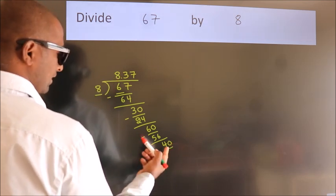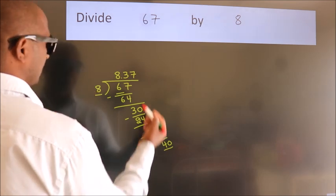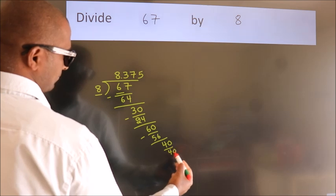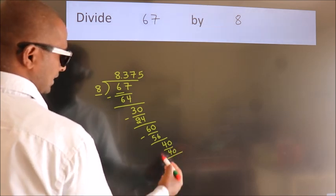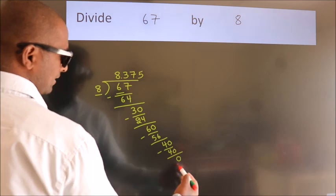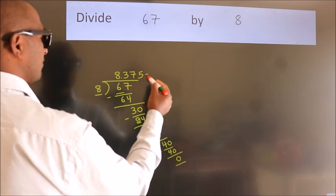When do we get 40 in the 8 table? 8 times 5 equals 40. Now we subtract and get 0. We got remainder 0, so this is our quotient.